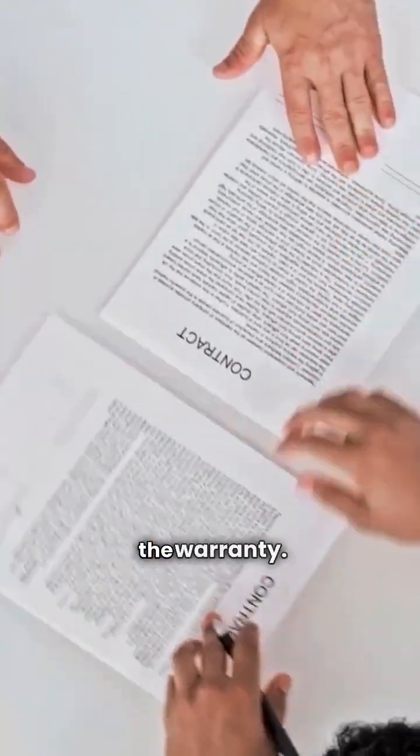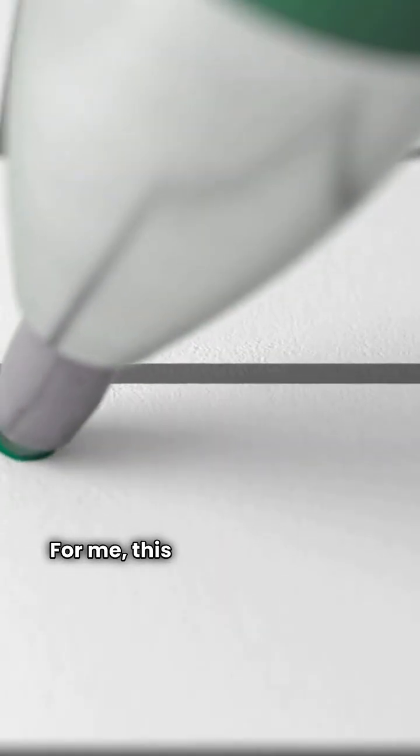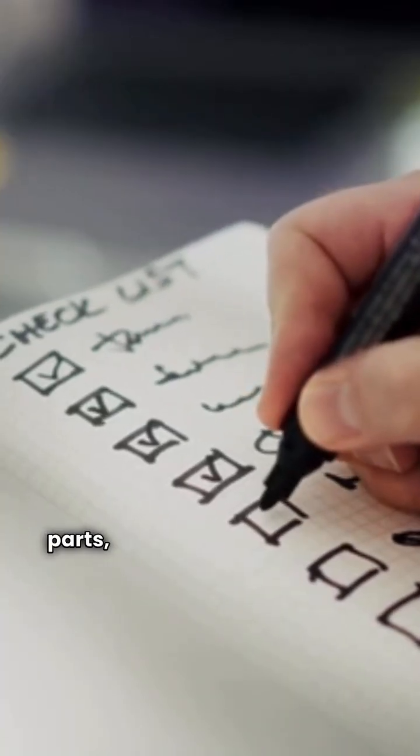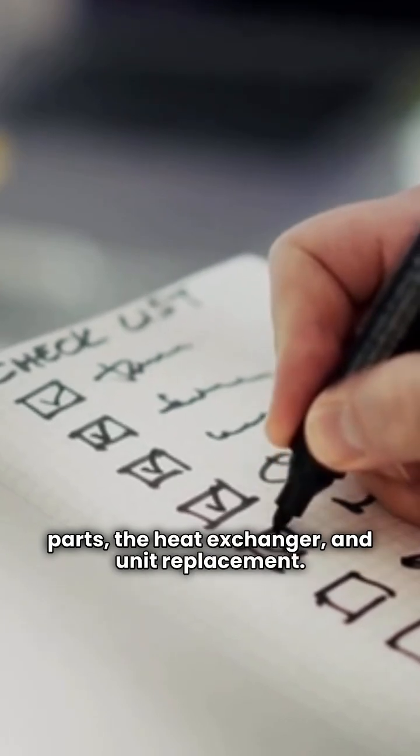Alright, here's where the rubber meets the road. The warranty. For me, this is the tiebreaker. You want to look at three things: parts, the heat exchanger, and unit replacement.